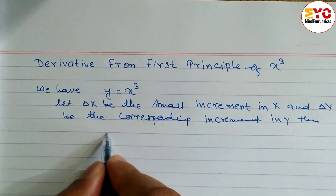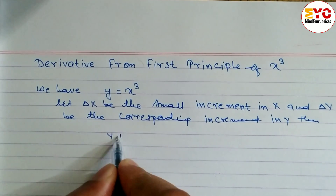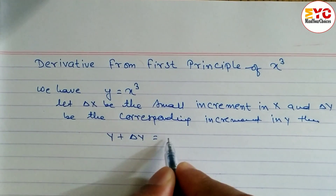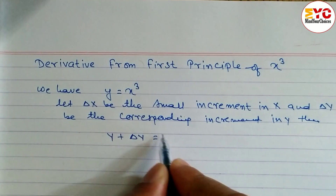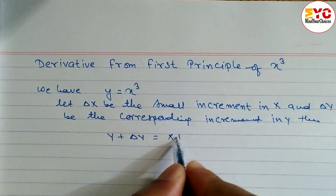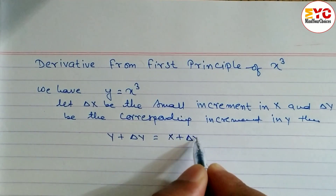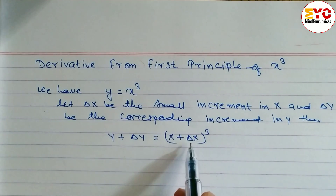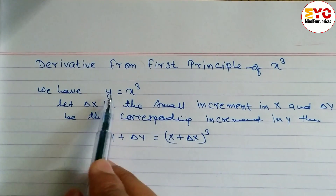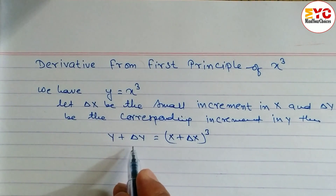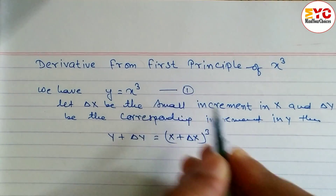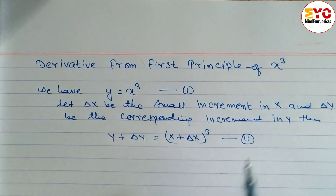So, y plus del y is equal to x plus del x whole cube. In x, we add del x, and in y, we add del y. This is equation 1, and the original y = x³ is equation 2.